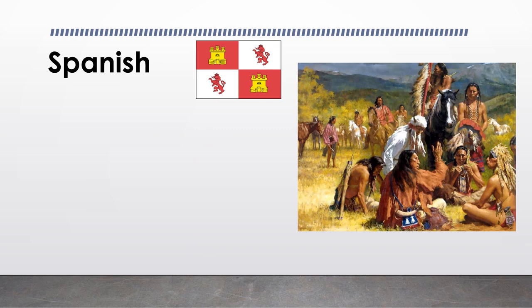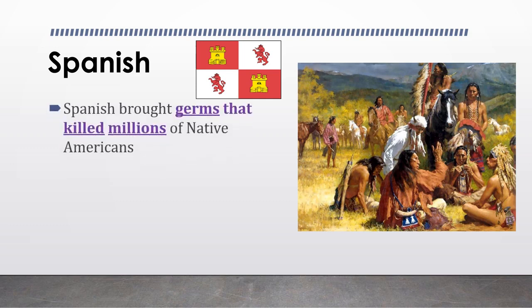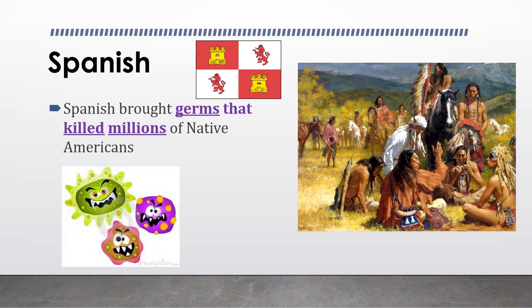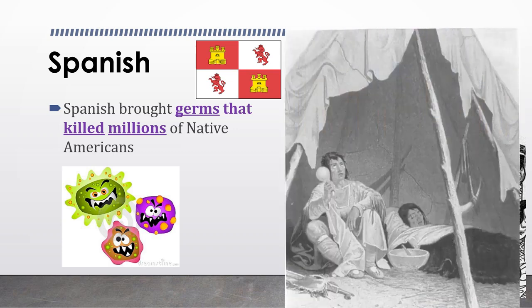Like we talked about in the Columbian Exchange, not all of the things brought over from the Old World were positive. Sadly, the Spanish brought germs that killed millions of Native Americans. Before the Europeans arrived, American Indians were remarkably free of serious diseases. But as the European explorers and colonists started coming over, this changed, and the consequences were disastrous. The death tolls from the newly introduced European diseases often reached 80 to 90 percent.